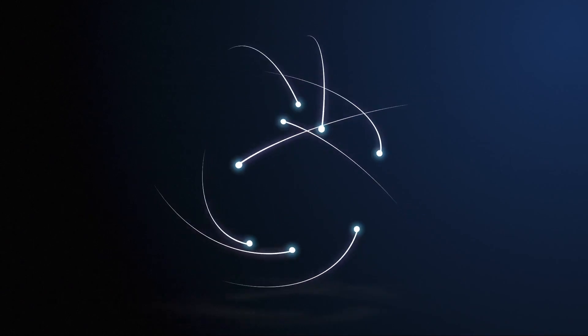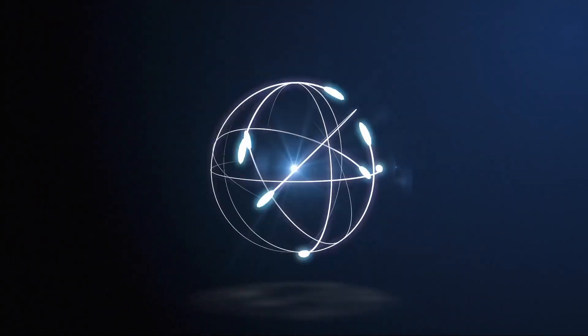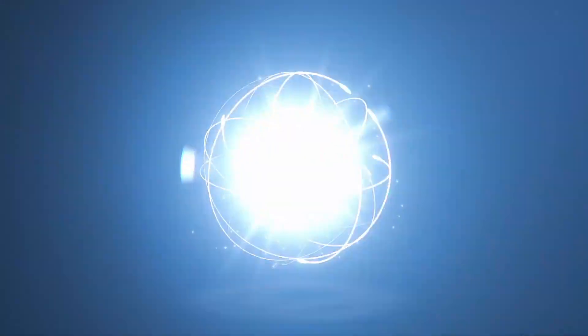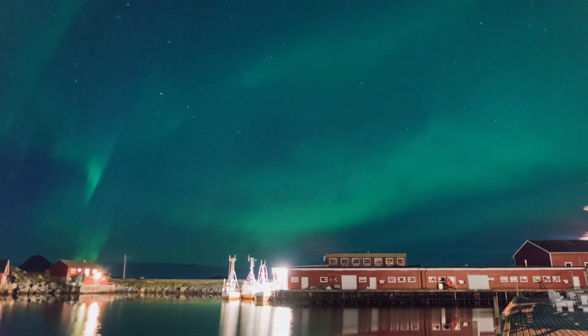Every atom in our atmosphere that has collided with the charged particles now has a surplus of energy, and when this energy is released again, the Northern Lights appear. So as a summary, you basically need the following factors in order to create an aurora.